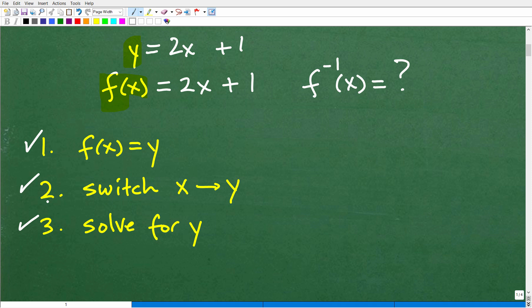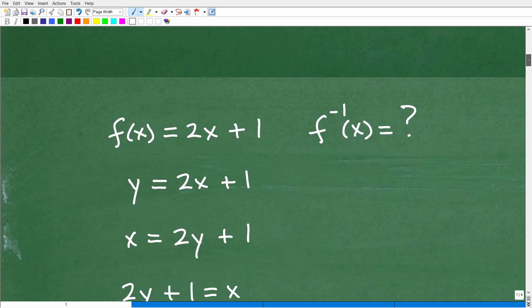You're going to switch x and y. And after you've done that, you're going to then solve for y. And when you do that, you will have found the inverse function, which is this notation right here. All right, so here is the problem. You can already see I already did step one for you. I changed out this f(x) for y. So what you want to do is switch the y and the x, and then solve for y. So go ahead and see if you can do that. If you do this successfully, you will have found the inverse function.